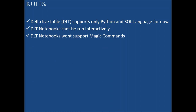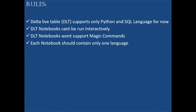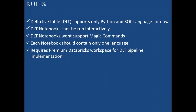The third point is DLT notebooks won't support magic commands. In a Python notebook, if you want to execute SQL code or Scala code you can use the magic command. Similarly, if you want to call another notebook from the current notebook you can use the percent run magic command. But those things will not work here. Also, each notebook should contain only one language — you cannot implement a second language in the same notebook.